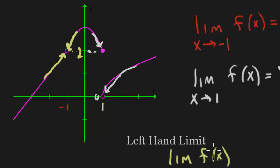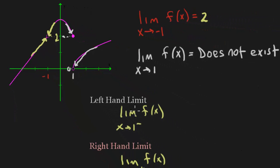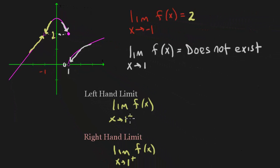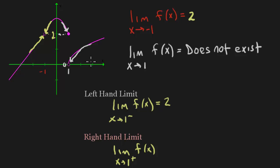So let's answer the one-sided limit question. The limit as x approaches 1 from the left: coming in from the left, I expected the y-value to be 2, so the limit is 2. The limit as x approaches 1 from the right: coming in from the right, I expected the y-value to be 0, so the limit is 0.